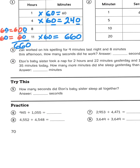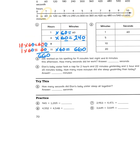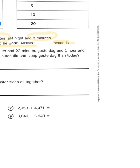Now, these story problems ask you to do the same thing. Only they write it out in a number story that has you convert the units. Zach worked on his spelling for 9 minutes last night and 8 minutes this afternoon. How many seconds did he work? Let me read that again. Zach worked on his spelling for 9 minutes last night and 8 minutes this afternoon. How many seconds did he work?